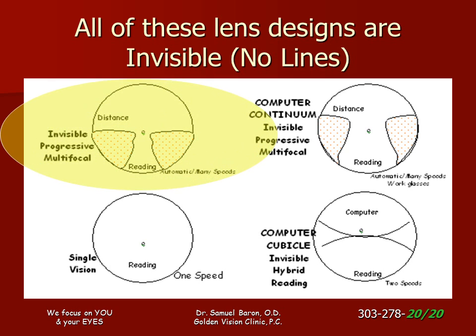Invisible progressive multifocal lenses are great for general purpose use — they have no lines, include many powers, and can work for limited computing.